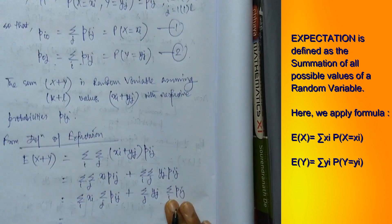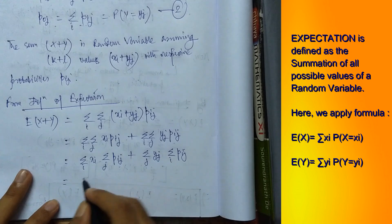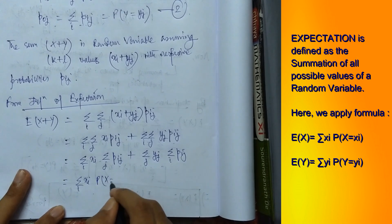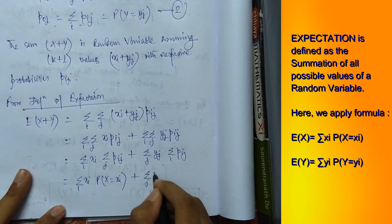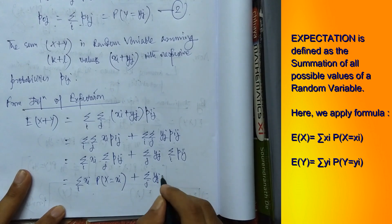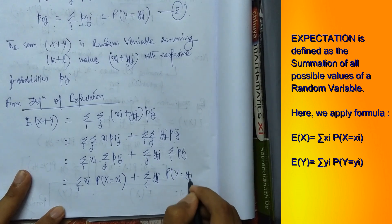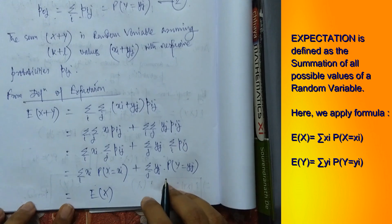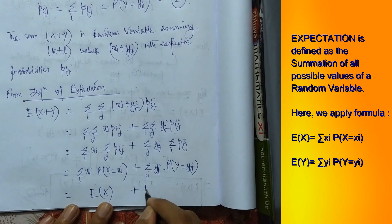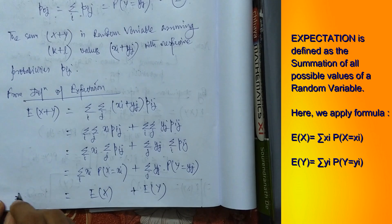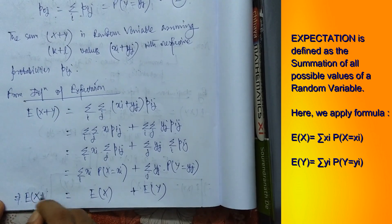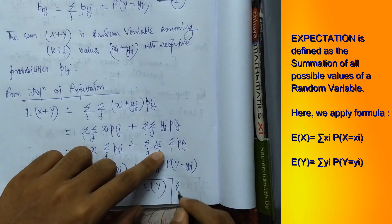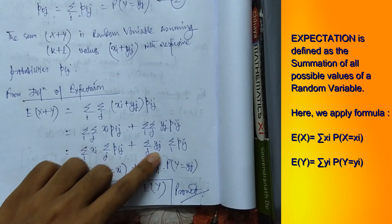Substituting these relations, Σi xi·P(X = xi) is the definition of E[X], and Σj yj·P(Y = yj) is the definition of E[Y]. Hence we have established that E[X + Y] = E[X] + E[Y]. This is our second law of expectation, proved — done and dusted.